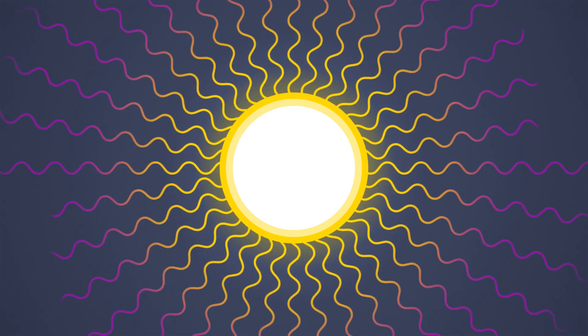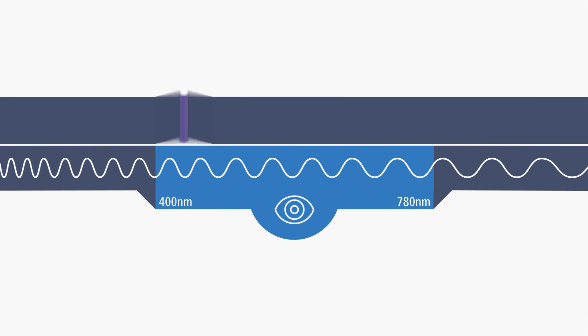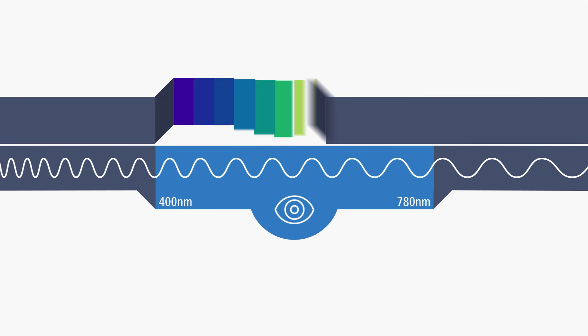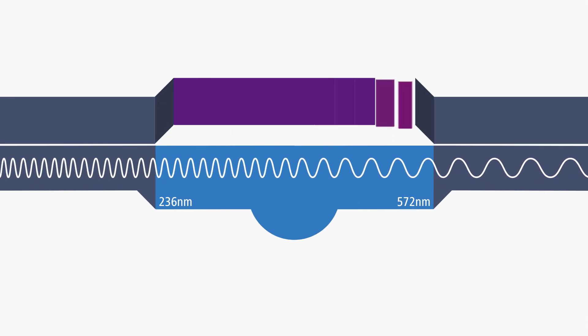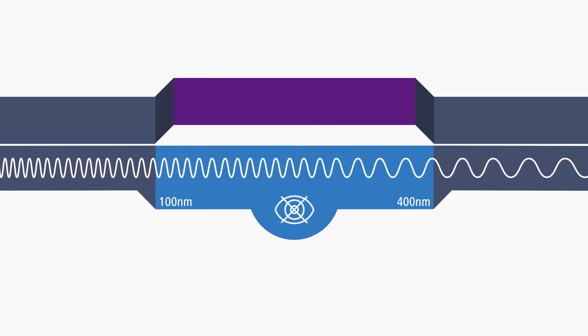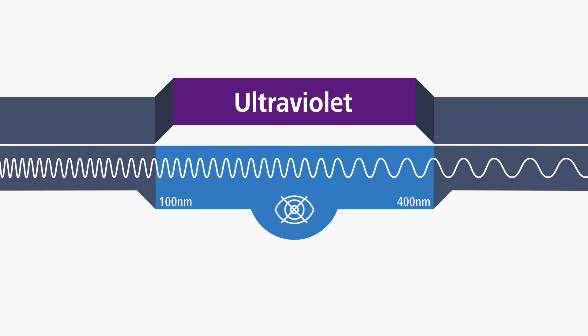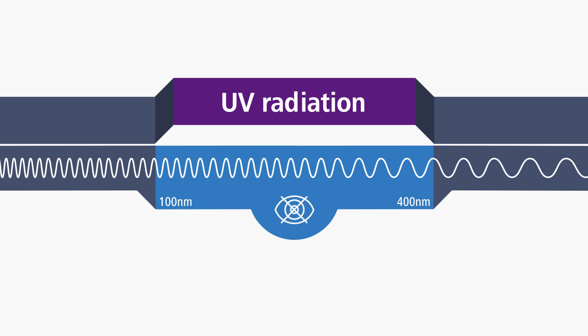The rays of the sun are electromagnetic waves. Depending on their wavelength, the light appears in different colors. But there are also invisible components, like ultraviolet light, or more precisely, UV radiation.